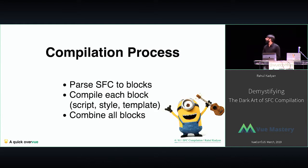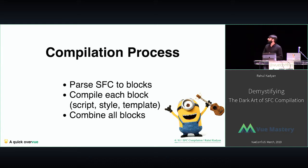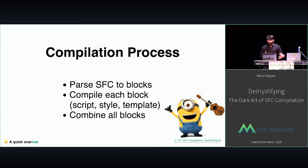So, a quick overview. In the bottom left corner would be the title of what we are talking about. This is the high-level overview of what we are going to do today. The compilation process is basically three steps: parsing the SFC into blocks, then compiling each separate block, and then combining them all together.